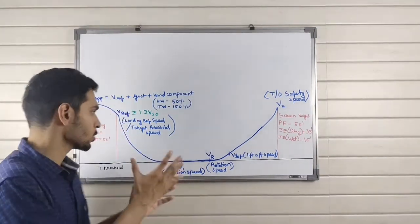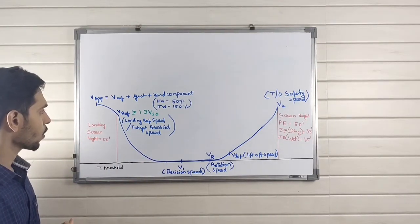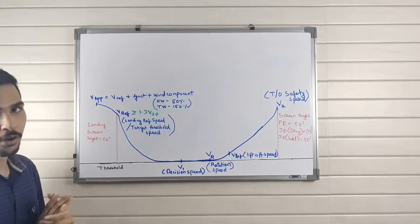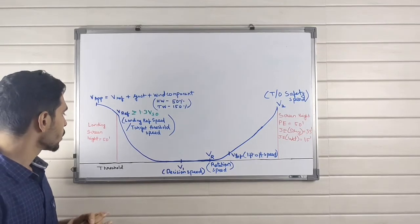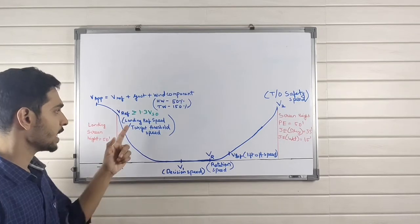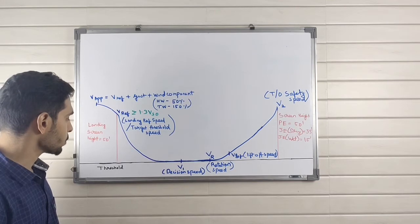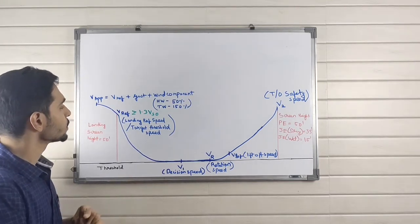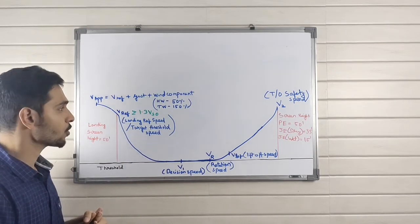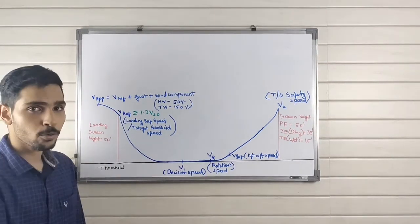Now we look at the approach part of the speeds. First up, we have your landing screen height, which is 50 feet—same for all types of aircraft. Next is your VREF speed, your landing reference speed or target threshold speed. It is the aircraft speed over the threshold, greater than or equal to 1.3 VSO. VSO is your stalling speed in landing configuration.